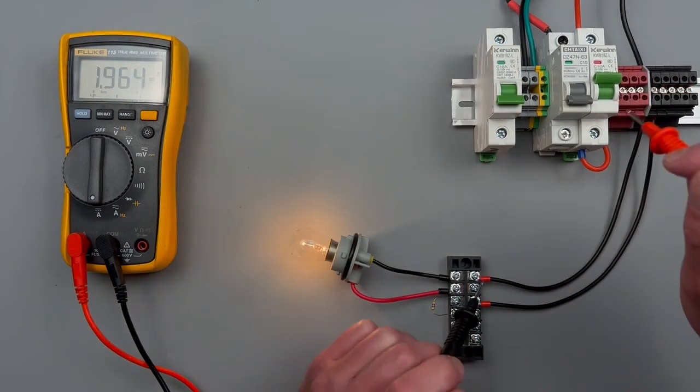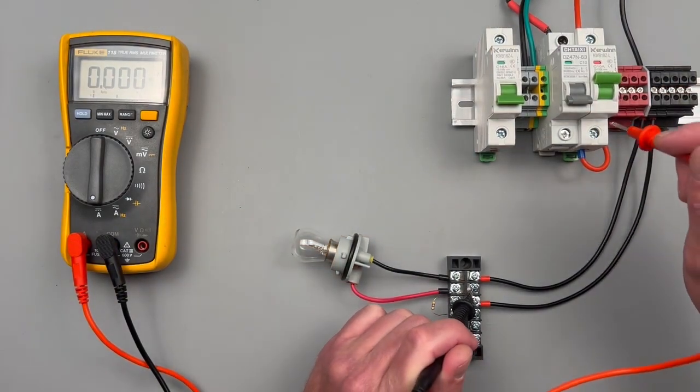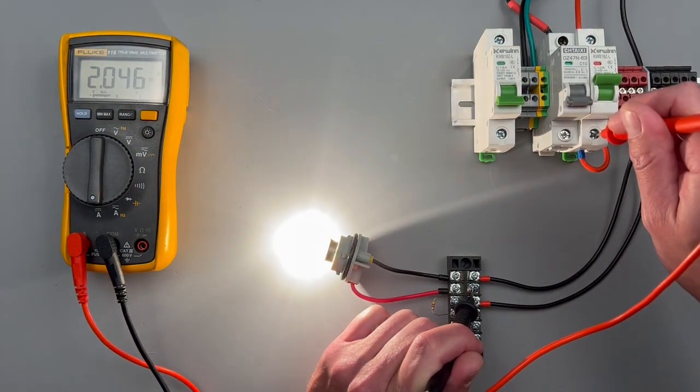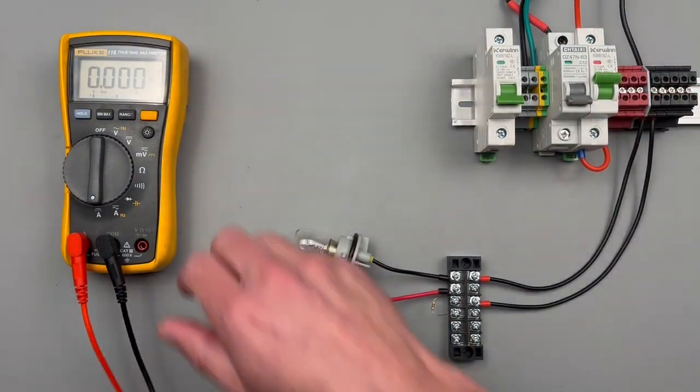With DC, you're going to have to be careful of the polarity of your leads and look out for that negative sign. So we're showing 2 amps. Let's go ahead and look at that with the other meter.